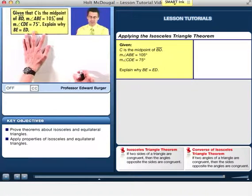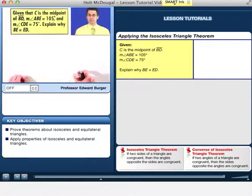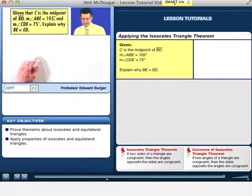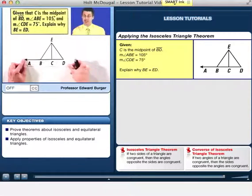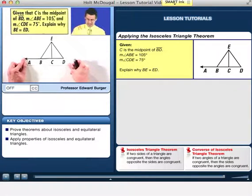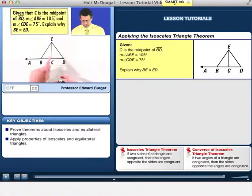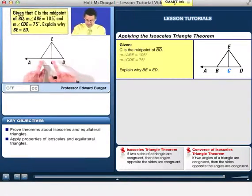Suppose that we're given that C is the midpoint of BD, and the measure of angle ABE is 105 degrees. So let's take a look at this picture. It's given to us, and so we see that C is the midpoint of BD. So there's a line segment, and C is the midpoint. Okay, great.